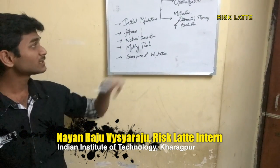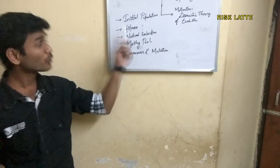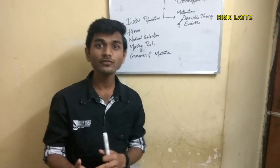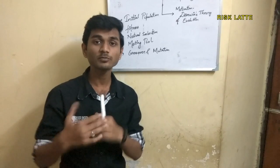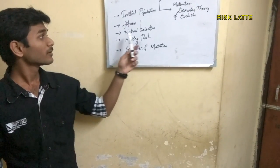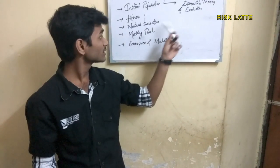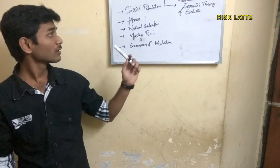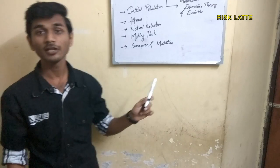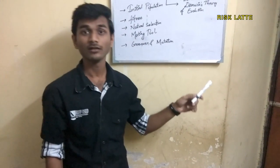Next is natural selection. Natural selection is basically done for the most fit individual. If the individual is most fit then it is most probable for natural selection. The selected individuals in natural selection are kept in the mating pool where functions like crossover and mutation are performed.